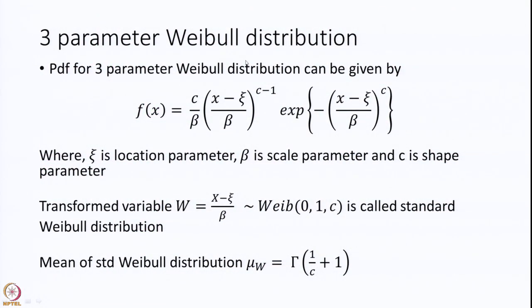In reality, we have to assume a three-parameter Weibull distribution, which was given a brief introduction earlier in the special random variables section. The probability density function of the three-parameter Weibull distribution is given in this format, where psi is called the location parameter, beta is called the scale parameter, and C is called the shape parameter. Now, let us take a transformed variable W which is equal to x minus psi over beta — then it turns out to be a Weibull distribution with location parameter 0, scale parameter 1, and shape parameter C.